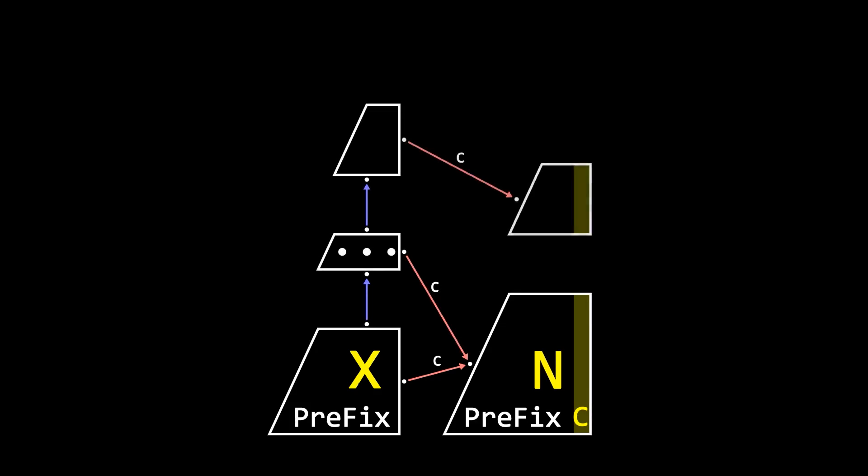If there is already a transition with the value C, know the node as Y. The node that Y's transition C points at is T. Because every node has a series of strings, we define the length of the node as the length of the longest string in the node.